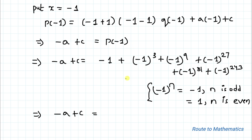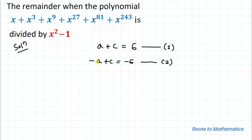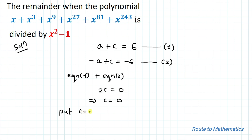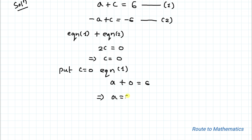So all six terms equal -1, giving -a + c = -6. Let's call this equation 2. Now we have two equations: a + c = 6 and -a + c = -6. Adding equations 1 and 2, the a terms cancel, giving 2c = 0, so c = 0. Substituting c = 0 into equation 1: a + 0 = 6, so a = 6.